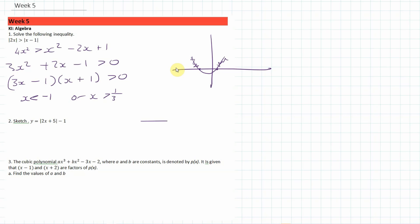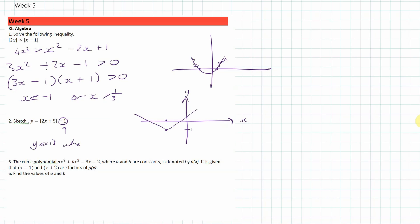Now if I was to sketch the next modulus function y equals |2x + 5| minus 1, we know that the place where it crosses the x-axis is at negative 2.5. But we've got the minus 1, so we drop it down 1, meaning it's at negative 1 when we're at negative 2.5. It crosses the y-axis when x is 0: 2 times 0 is 0, plus 5 is 5, modulus 5 is 5, 5 take away 1 is 4. So the y-intercept is at positive 4.